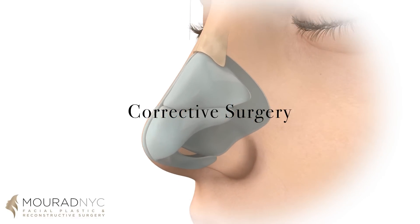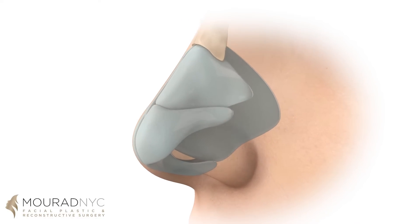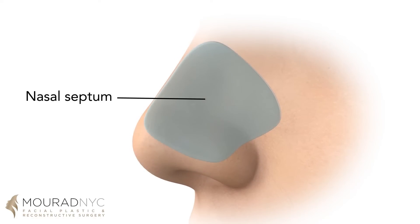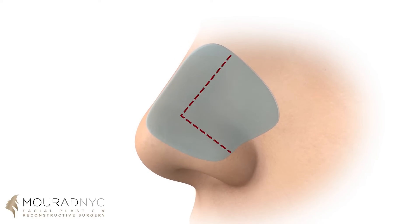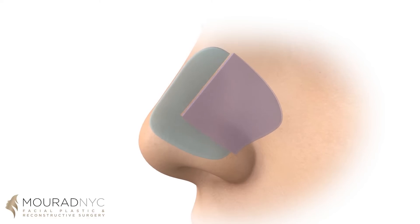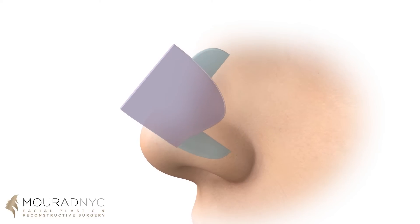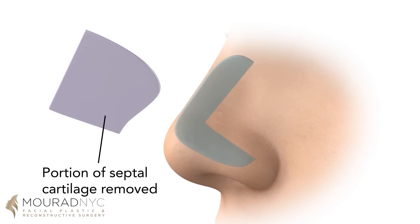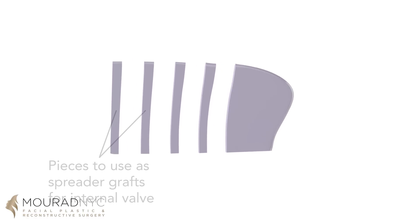In order to correct weakening or narrowing of the nasal valve, a portion of the nasal septum is removed. It is important to maintain what is called an L-strut — an L-shaped portion of the septum that is at least one centimeter in width. A rectangular portion of the septum is removed, and grafts are fashioned from the septum that are later used to reconstruct the nasal valve areas.